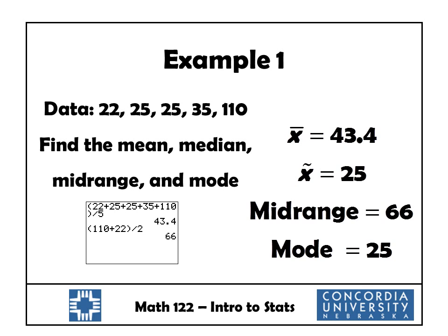Notice that the mean of 43.4 is larger than all but one of those data values. If we reported that the mean salary at Advantage 2000 Consultants is $43,400, that would be accurate but would give an inaccurate impression — it makes the salaries look a little bit higher than they really are.